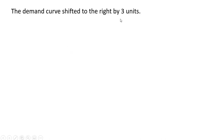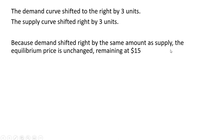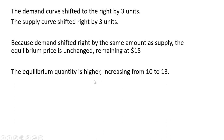The demand curve shifted right by three units and the supply curve shifted right by three units. The increase in demand puts upward pressure on the price, and the increase in supply puts downward pressure on the price. Since both curves are shifting by the same amount, one effect is offset by the other — so the equilibrium price is unchanged, remaining at $15. The equilibrium quantity is higher, increasing from 10 to 13 units. An increase in demand increases the equilibrium quantity, and an increase in supply also increases the equilibrium quantity, so taken together the equilibrium quantity is definitely higher.